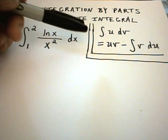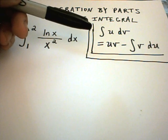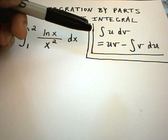So again, recall the integration by parts formula says the integral of udv equals uv minus the integral of vdu.